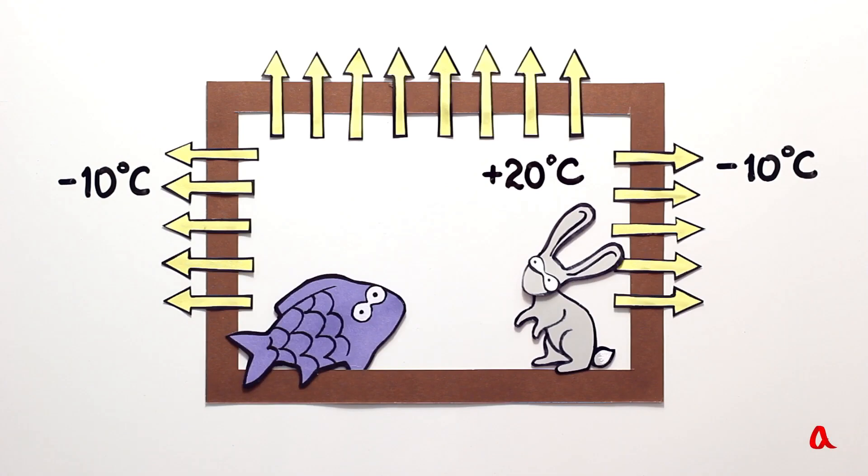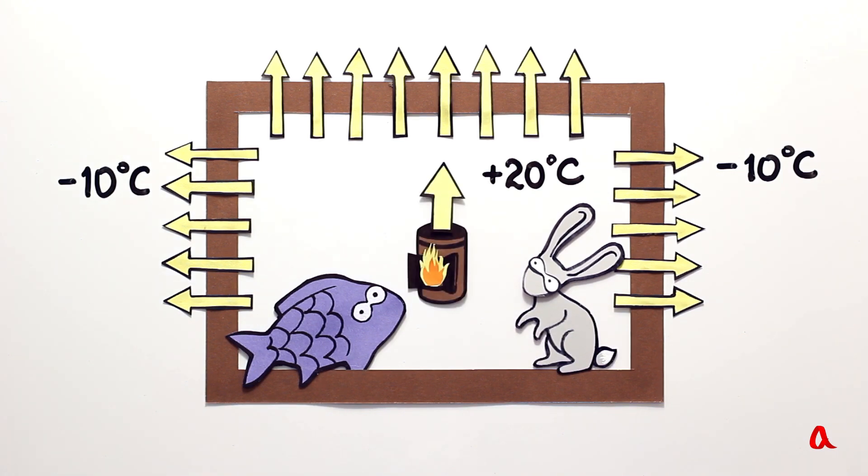When it's cold outside, heat gets out of the house through the walls. These losses have to be compensated by burning fuel and creating new portions of thermal energy. What does the penetration of heat through the walls depend on?